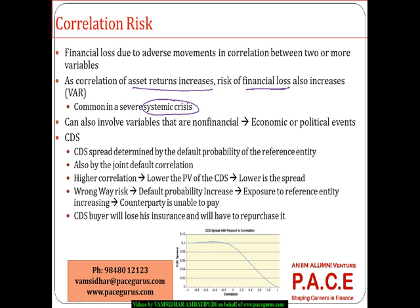Correlation risk could also include non-financial variables. Some kind of economic crisis occurring causes the whole financial markets and all securities to move in the same direction. Or a political event creating political unrest in the economy causes almost all stocks to show a downward turn, while a political positive event causes almost all of them to show improvement. So not just financial variables, but economic and political variables can also change the correlation between two assets — and there we need to be vigilant.